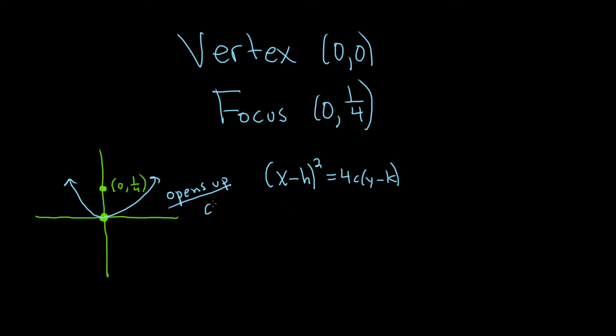Secondly, it tells us that c is positive. So whenever a parabola opens up and down, this is the formula you use. If it opens up, c is positive. If it opens down, c is negative.